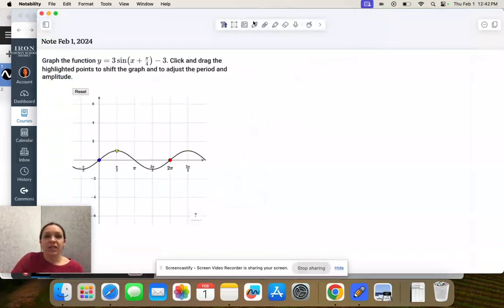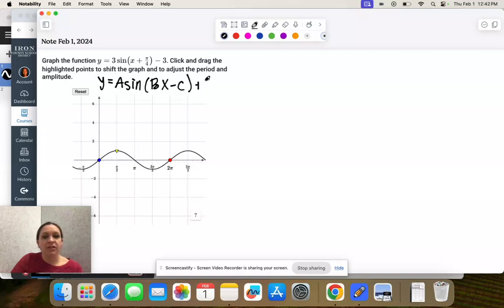So first thing, let's identify a, b, c, d. Remember our general form is y = a*sin(bx - c) + d. a is the number in front, it's 3.